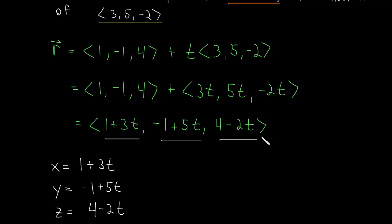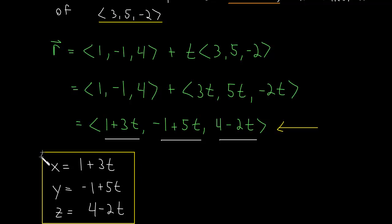We can convert this to the parametric equations, because we just take out the components and write x = 1 + 3T, y = −1 + 5T, and z = 4 − 2T. It's a very simple conversion. If you're given parametric equations you can easily convert to the vector equation by just throwing those expressions into a vector. And vice versa — if you have the vector equation, you pull out the components and write x equals the first, y equals the second, z equals the third. This was a simple example, but hopefully it illustrates the concept.